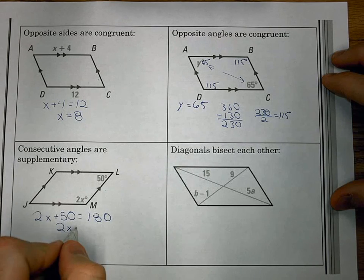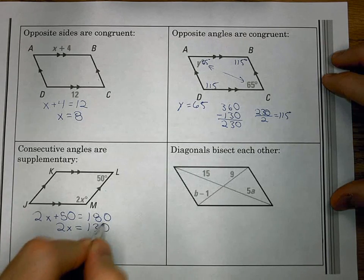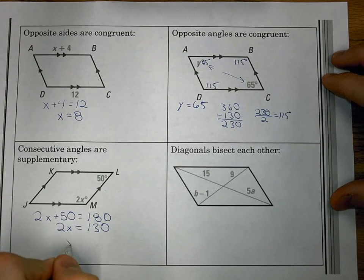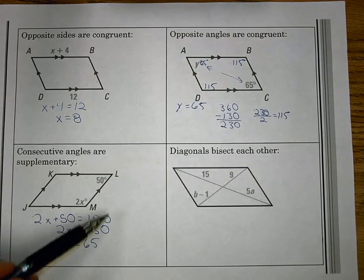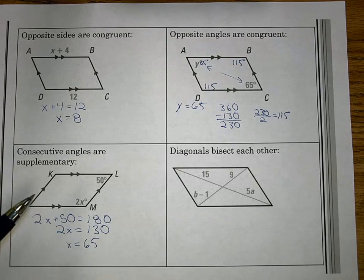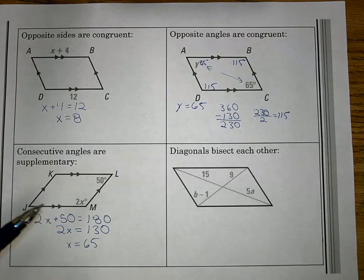So 2x plus 50 equals 180 gives us 2x equals 130, and x being 65. If I wanted to, I could go further and find the rest of the angles here, but we're okay with what we have. What I do want to look at is notice this problem. If I just take this piece of my parallelogram.